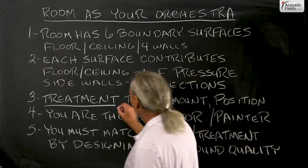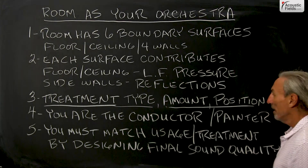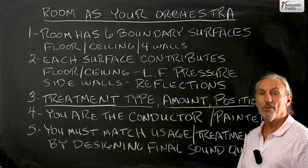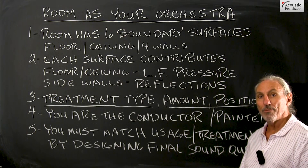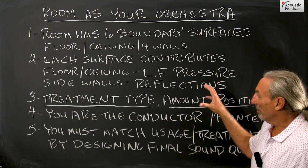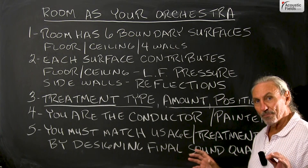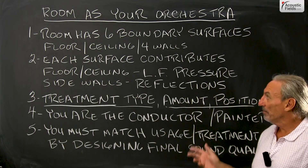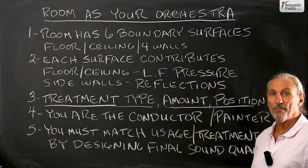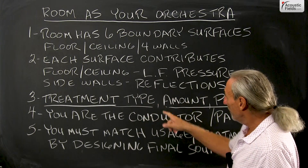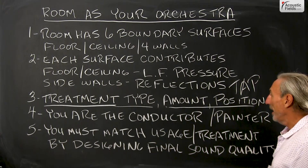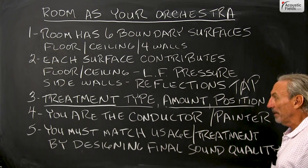We can also use treatment type, amount, and position to generate the sound quality that we want. There are great diffusion tools, wonderful low frequency absorption tools, and really good middle and high frequency absorption tools. The real symphony — the real conduction of all of this — is to balance everything out and match it to what we're trying to do. Treatment type, amount, and position: that acronym we've designed is called TAP, and that's something you really need to be aware of.